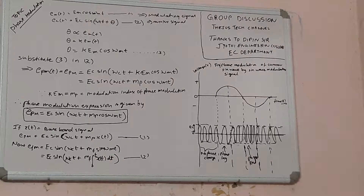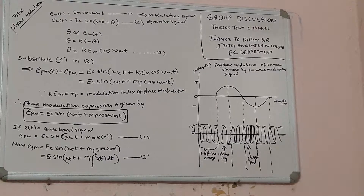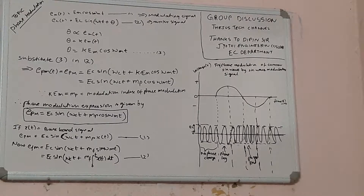We will discuss about the graph on the right side. Phase modulation is defined as the process by which the phase of the carrier signal is changed in accordance with the instantaneous amplitude of the message signal. Amplitude and frequency remain constant after the modulation process. The carrier signal phase responds to the instantaneous amplitude of the message signal.